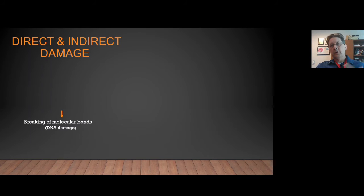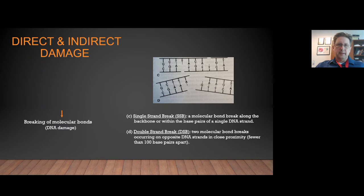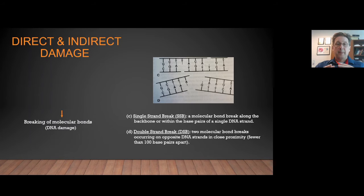So we've had direct or indirect damage occur in our DNA through ionizations caused by radiation. Our DNA is damaged — we've broken molecular bonds within the DNA. If you have one damage site where you've broken a molecular bond, this is called a single-strand break, which could be a bond break in the DNA backbone or in the base pair. If you have more than one molecular bond break within close proximity — say within 100 base pairs — that's considered a double-strand break. These types of breaks are much more difficult for the cell to repair and cause much more of a biological effect.